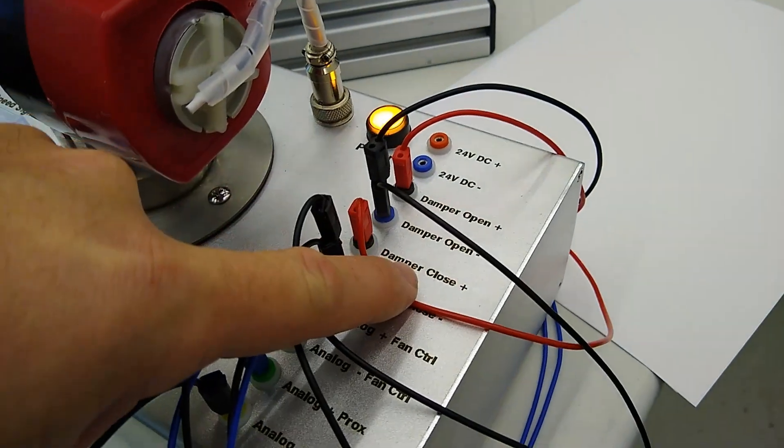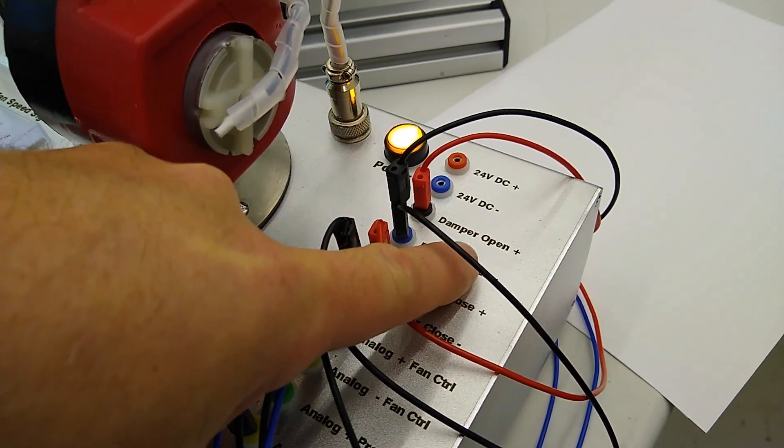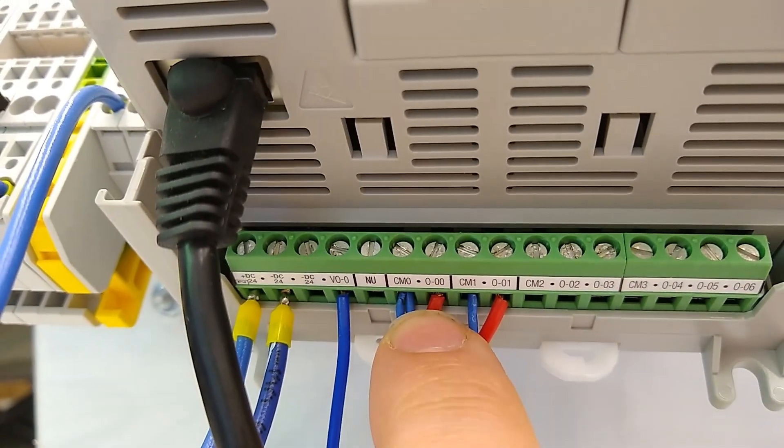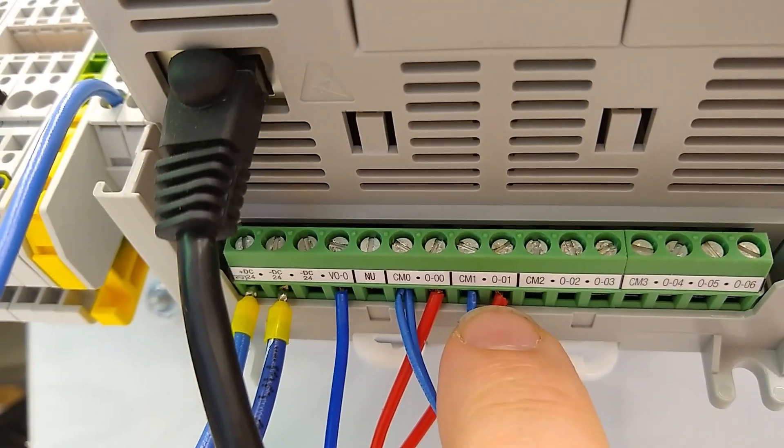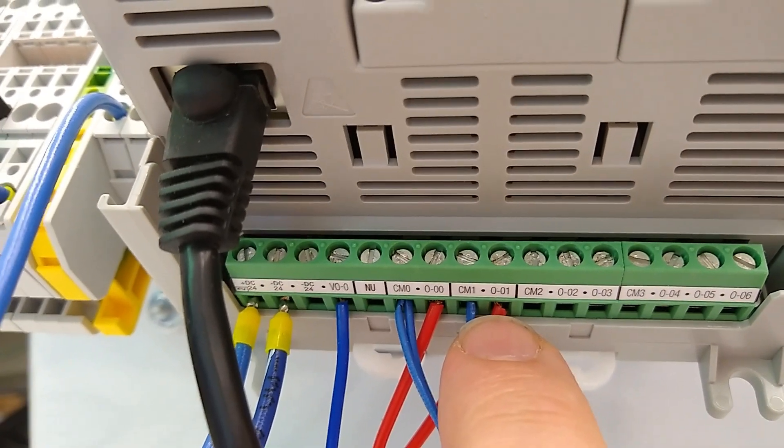Then we're going to have our damper close plus and our damper open plus. And our damper open is going to go to output zero and our damper close is going to go to output one.